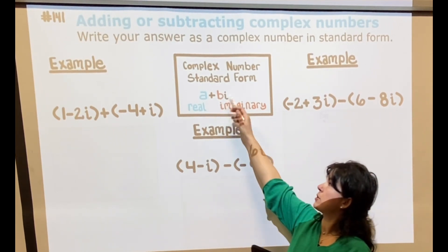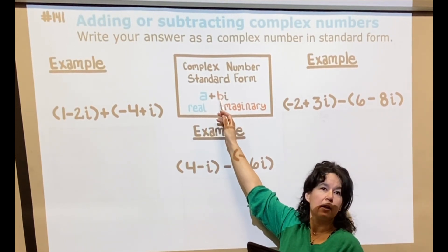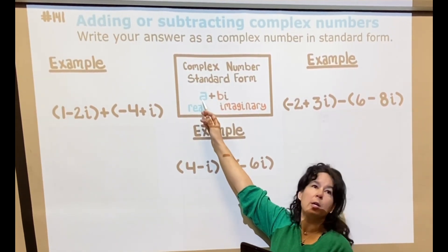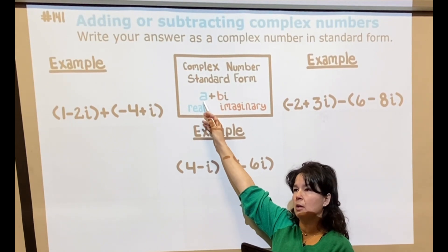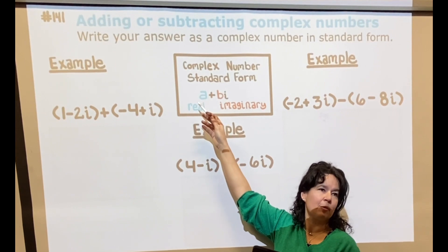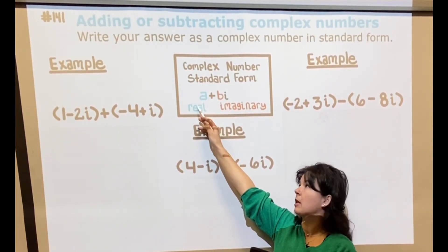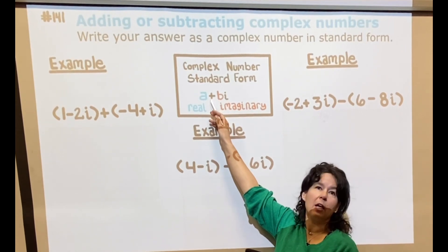Same thing with complex numbers. The standard form is a plus bi, and the a is the real number, some number off the number line. You're going to often see like 2, negative 7, something like that, but technically square root of 2 would be fine—any number off the number line.